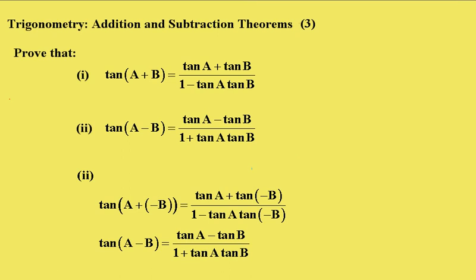This is similar to the previous video. To prove the next result, tan(A - B) equals tan A minus tan B over 1 plus tan A tan B, we simply replace in this first one which we just proved, this B with minus B.